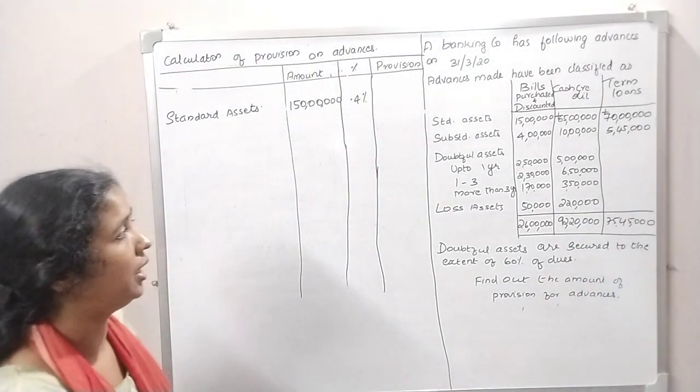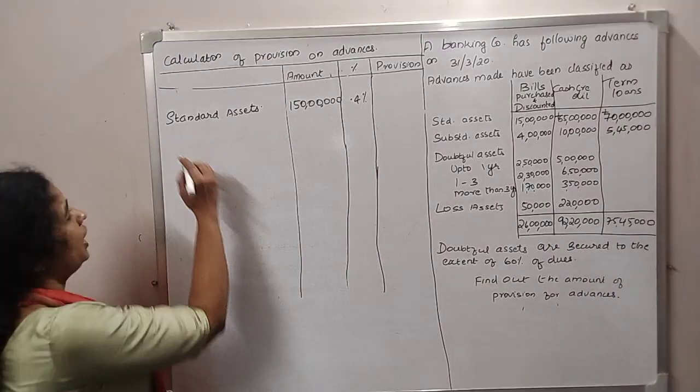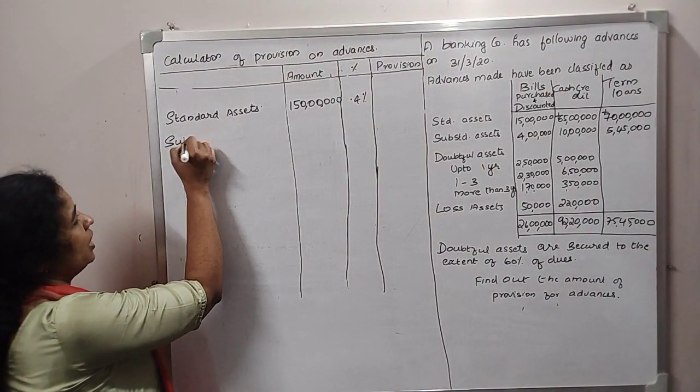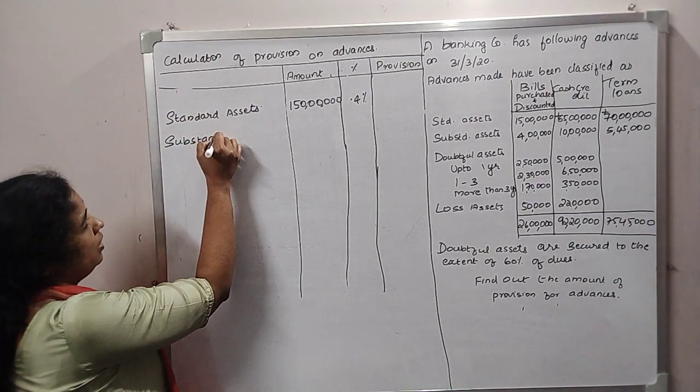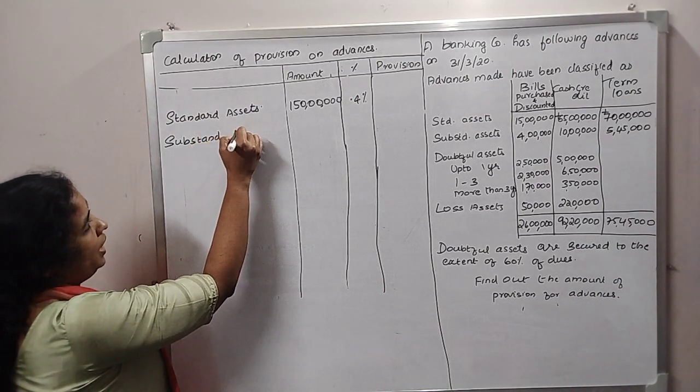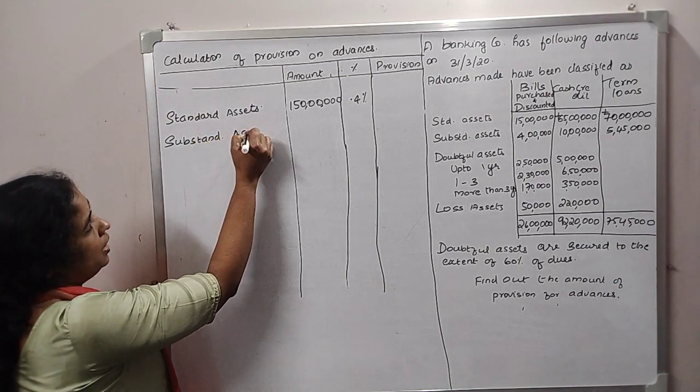This 3-item total is 150 lakh. We will calculate with a rate of 0.4%. The standard asset provision rate is 0.4%.